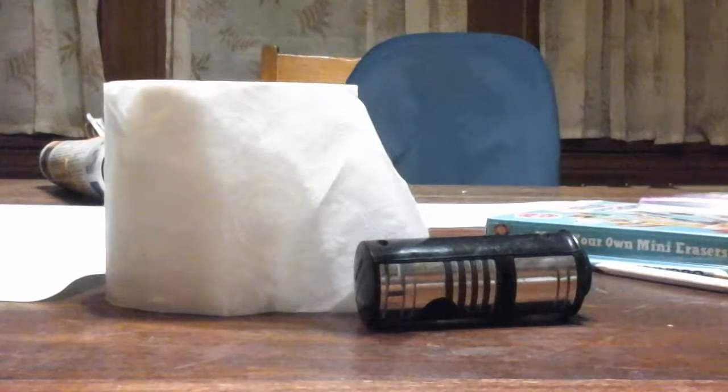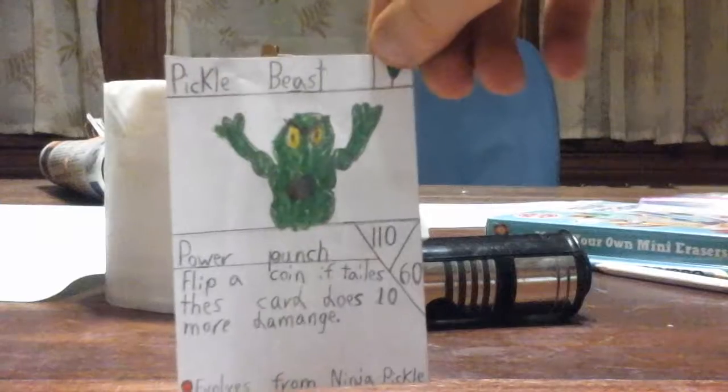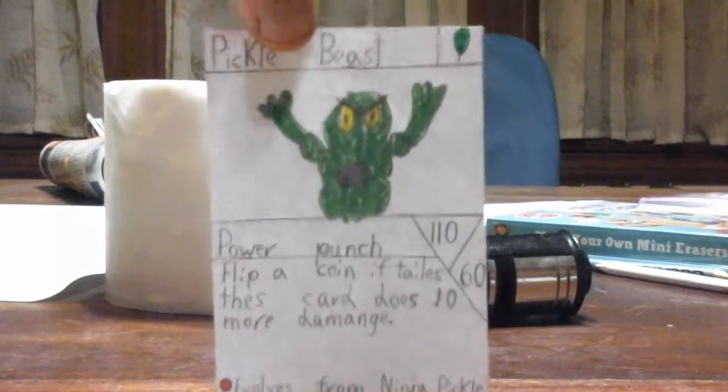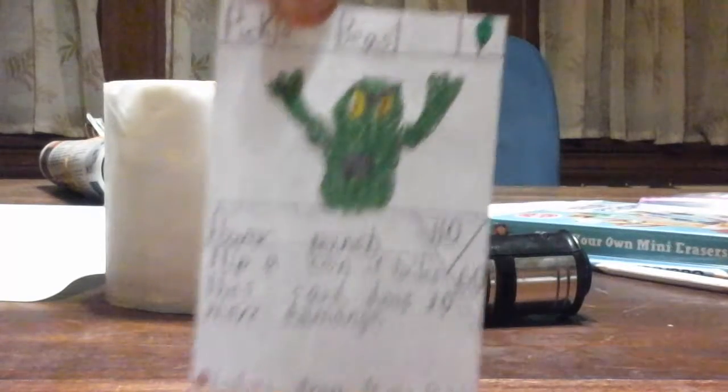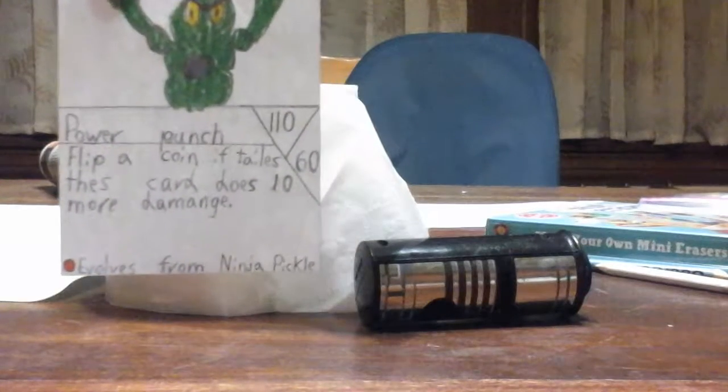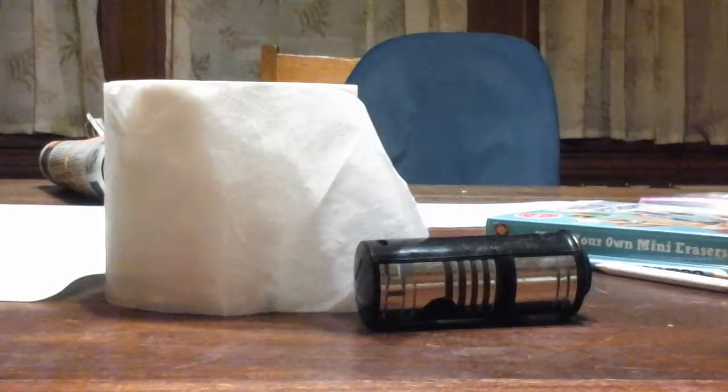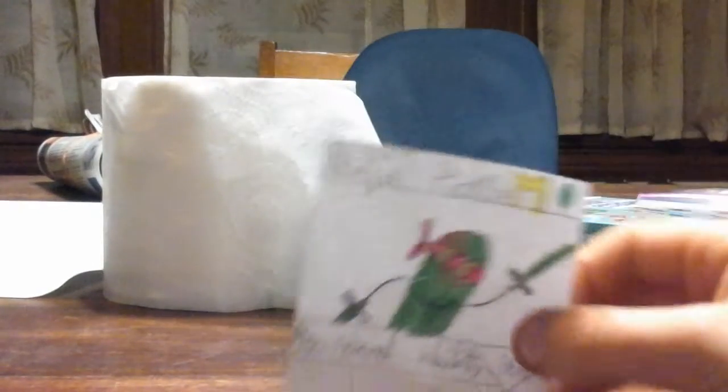Next is, oh I love this card, Pickle Beast. He's a plant type, there's his picture. He has 110 health, 60 damage. Power 5, Power Punch is his attack. Flip a coin, if tails this card does 10 more damage, evolves from Ninja Pickle, he's a rare. That's not even that good of a card, but oh sweet, our mega!